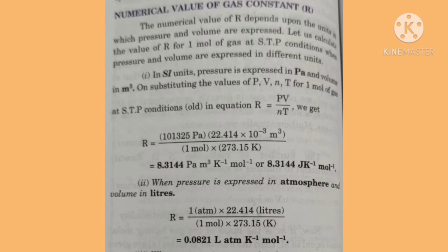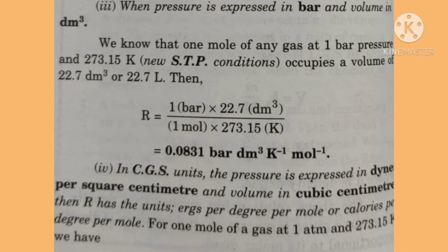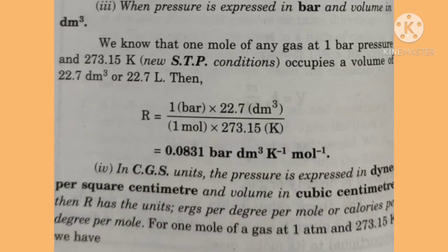When pressure is expressed in bar and volume in litres at STP conditions, R equals 1 bar × 22.7 L upon 1 mol × 273.15 K, which equals 0.083 bar·L per Kelvin per mole. In CGS units, pressure is expressed in dynes per square centimeter and volume in cubic centimeter, giving R in ergs per degree per mole or calories per degree per mole.